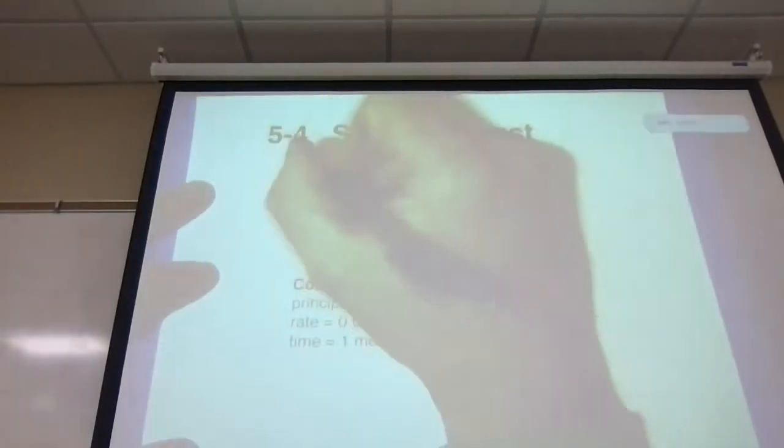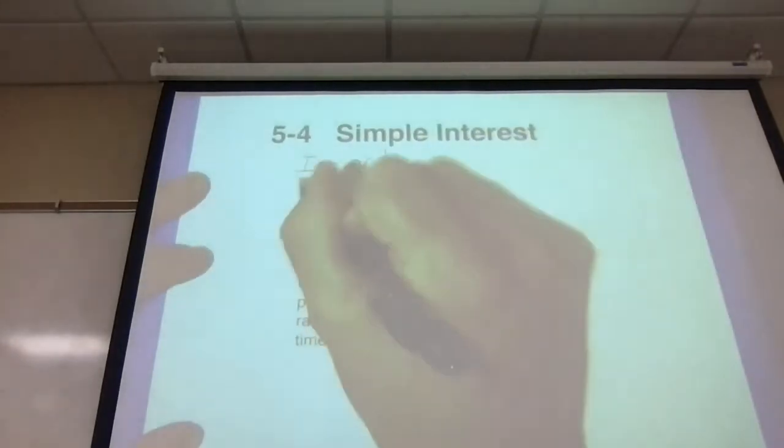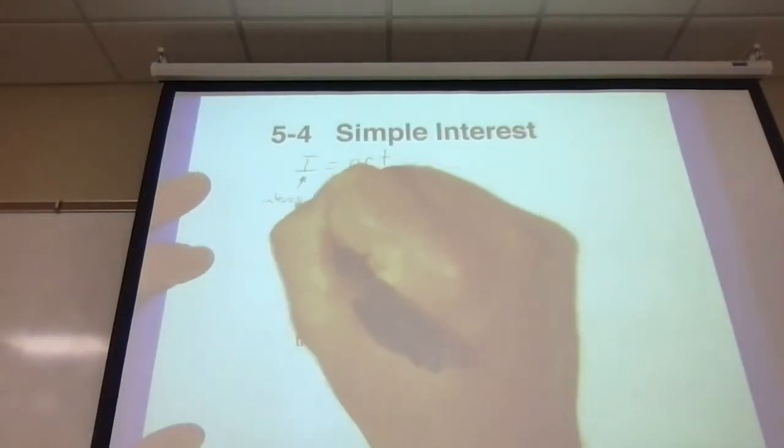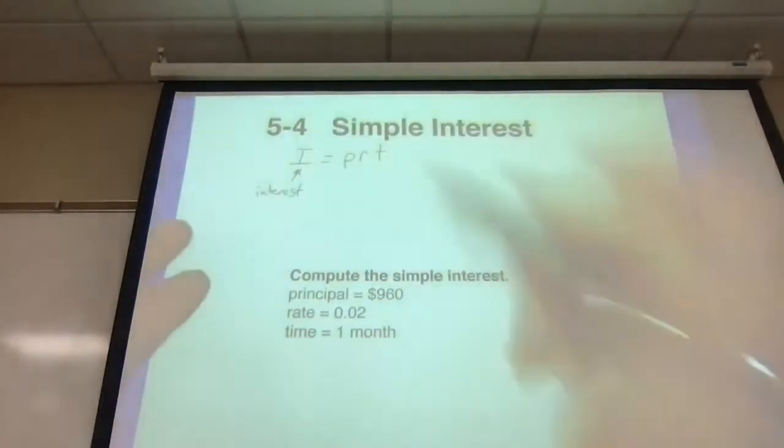Now with simple interest, we're going to have a formula that they're going to give us: I equals PRT. I stands for interest. When they ask you to find the simple interest, you're going to find the I part of your equation here.